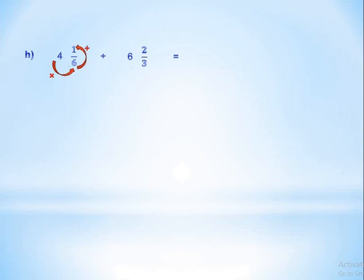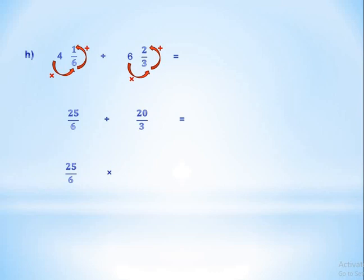Letter H: four and one-sixth divided by six and two-thirds. Convert both to improper fractions: 4 times 6 equals 24, plus 1 equals 25, giving 25 over 6. For six and two-thirds: 6 times 3 equals 18, plus 2 equals 20, giving 20 over 3. Apply keep-change-flip: keep 25 over 6, change to multiplication, flip 20 over 3 to get 3 over 20. Simplify: 25 and 20 are both in the 5 times table — divide by 5 to get 5 and 4. Then 3 and 6 are both in the 3 times table — divide by 3 to get 1 and 2. Multiply: 5 times 1 equals 5, and 2 times 4 equals 8. The answer is 5 over 8.